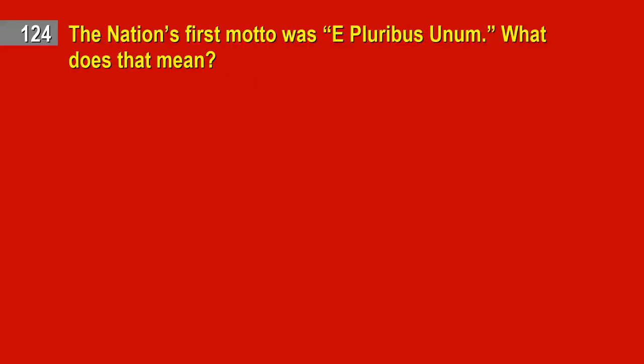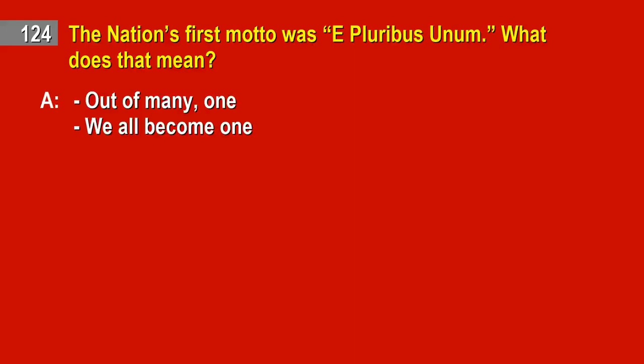Question 124. The nation's first motto was E Pluribus Unum. What does that mean? Answer: Out of many, one. We all become one.